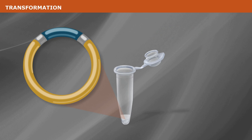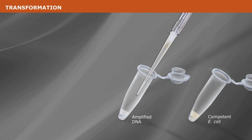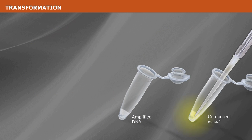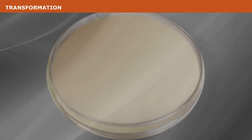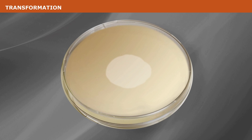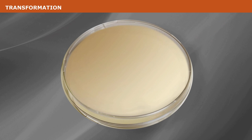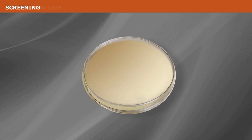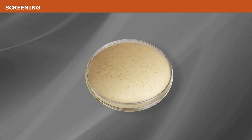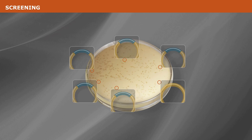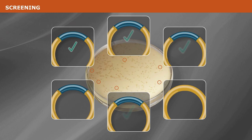Transform the recombinant plasmid into competent E. coli. Spread onto agar plates that contain the appropriate antibiotic for selection. Screen the resulting colonies for the gene or fragment of interest.